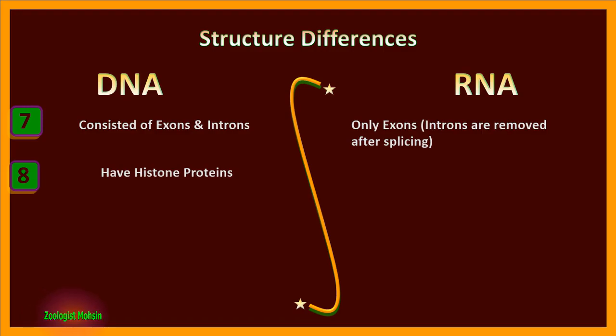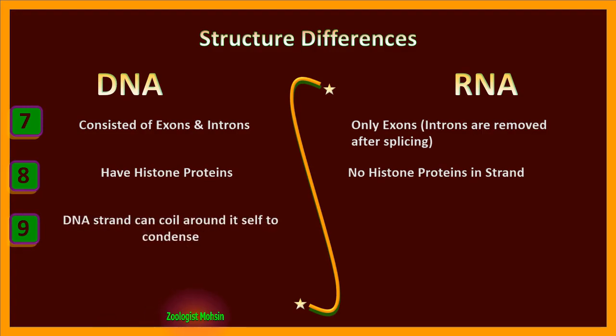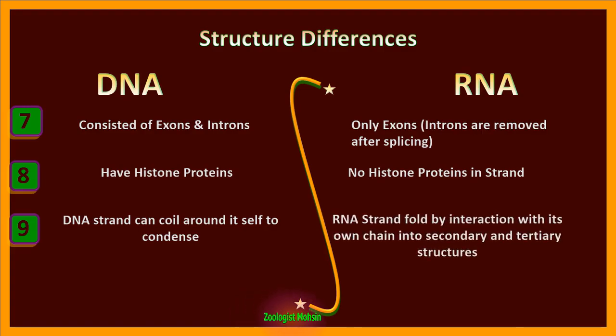Number eight: DNA is wrapped around histone proteins. Although histones are not part of DNA, histones are compulsory for coiling of DNA and stability. Similarly, RNA doesn't have any kind of histone proteins.